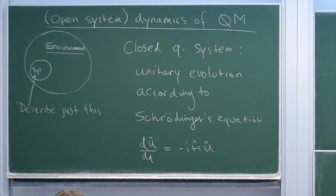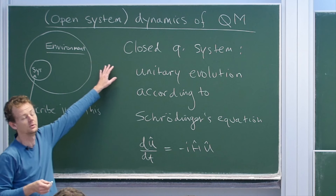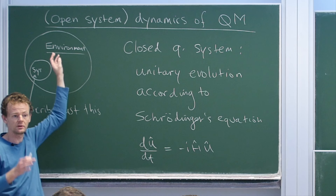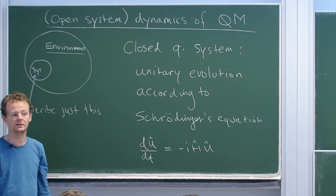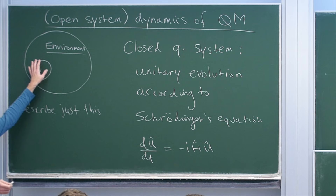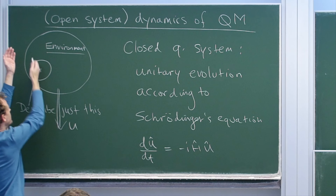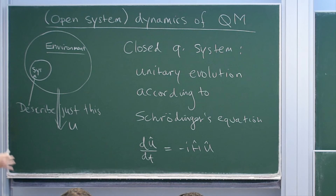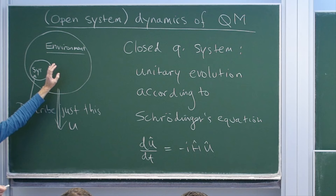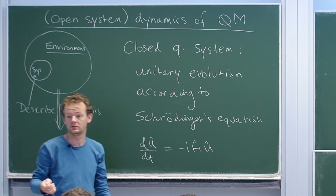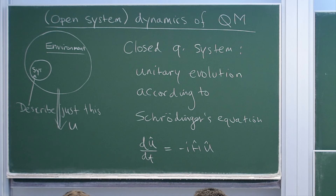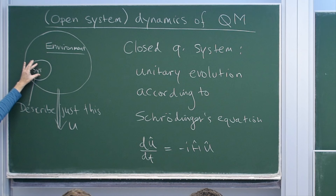As you are no doubt aware, normal systems that we interact with every day are not closed. There is an environment which could be some electromagnetic field you cannot isolate from the system, or vibrations in the room, or other sources of noise. And even though the whole system as a collective entity undergoes unitary evolution—because the system plus environment is a closed quantum system—if we want to describe just the system itself, something's going to happen.